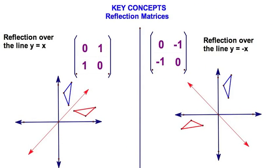The other two matrices we'll use are for reflections over y equals x and y equals negative x. Notice these two look a little different — the zero elements run from upper left to lower right, meaning the non-zero elements go from lower left to upper right. The y equals negative x matrix has the added complication of a couple of negatives. We'll do a sample of at least one of these.